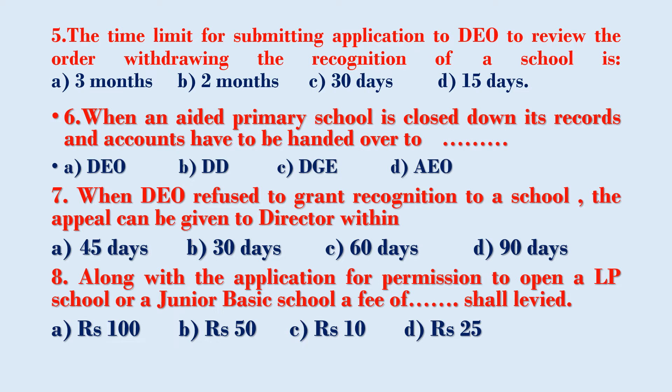Along with the application for permission to open a new LP school or a junior basic school, a fee is levied. Option A – Rupees 100, Option B – Rupees 50, Option C – Rupees 10, Option D – Rupees 25.